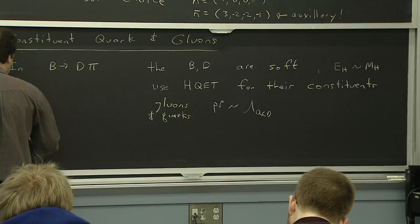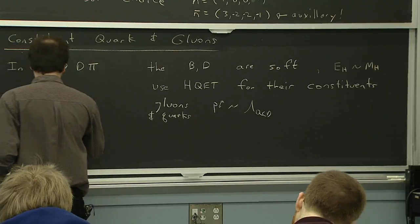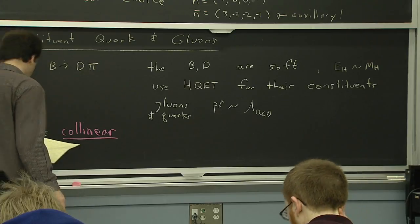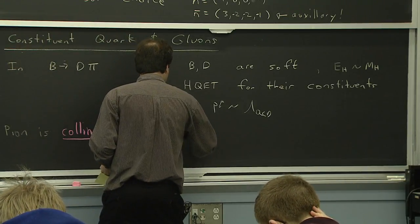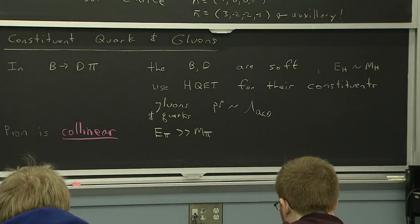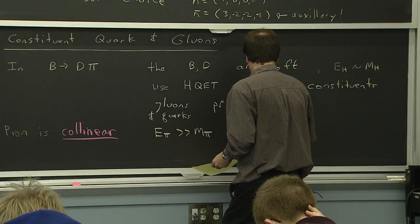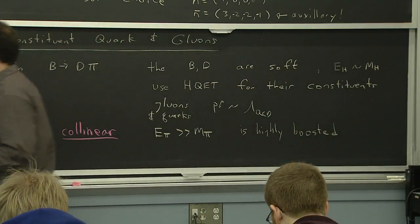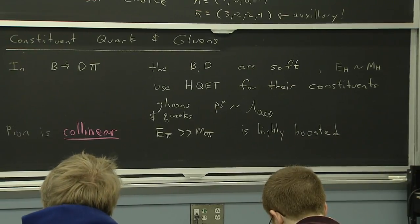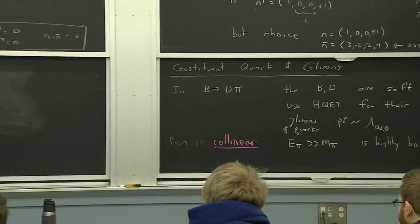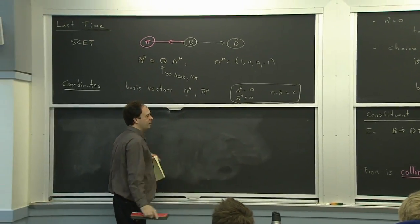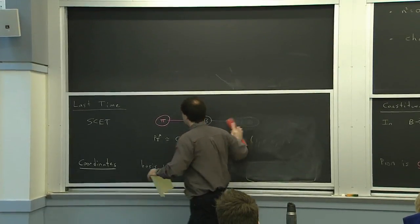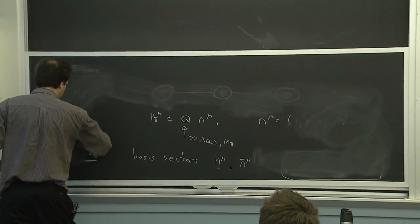The pion, on the other hand, is what we would call collinear. The pion's energy is much greater than its mass — it's highly boosted. If you talked about it in the rest frame, the constituents of the pion would have momentum of order lambda_QCD. But if you talked about the pion in the rest frame, you'd have to talk about the B and D in a boosted frame. So let's stick with describing the B and D in the rest frame — the B meson is in its rest frame, the D meson is slow, and we're stuck with the pion being energetic.